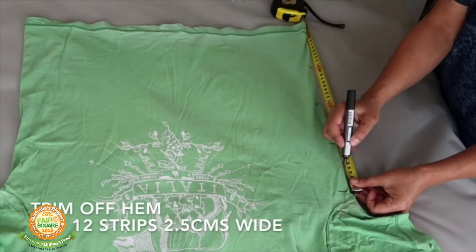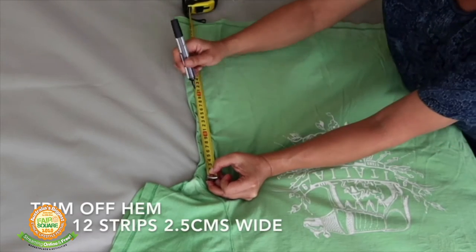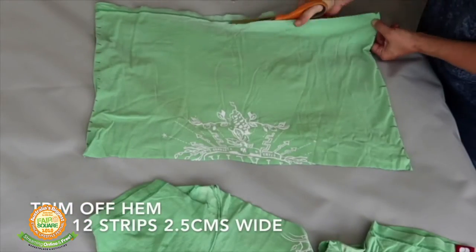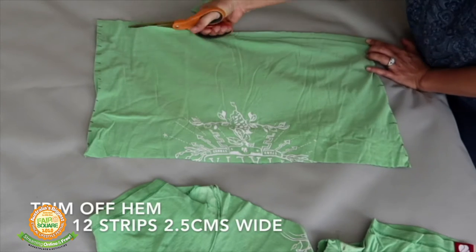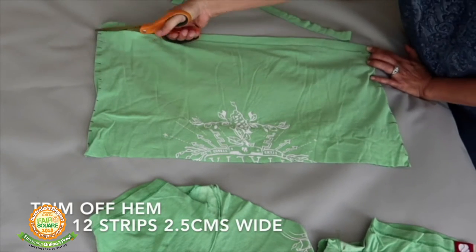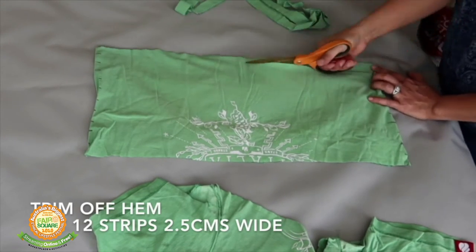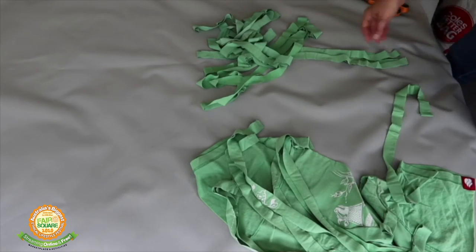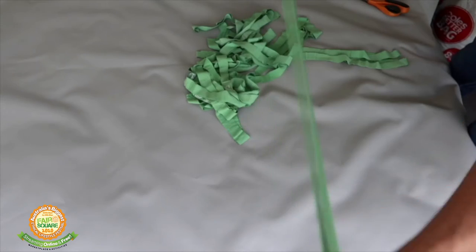Today we're going to make a hanging plant holder out of an old t-shirt. You can see that I'm measuring down the sides and I need 12 strips 2.5 centimeters wide. I'm cutting it under the arms and then cutting the hem off, and then cutting as carefully as possible 12 strips of t-shirt 2.5 centimeters wide. Once they're cut, we stretch them out, which causes them to become more like a rope or string.